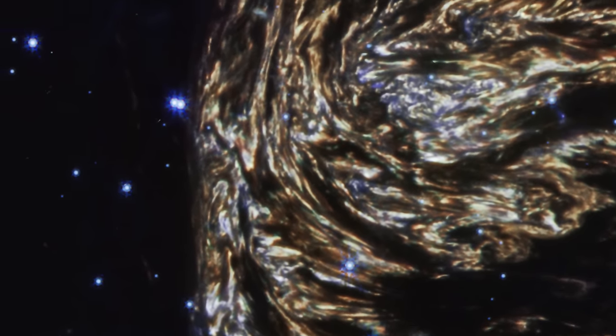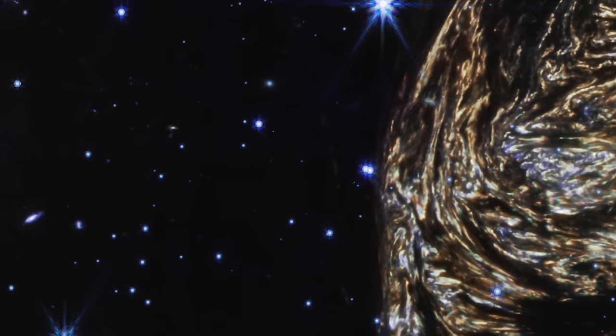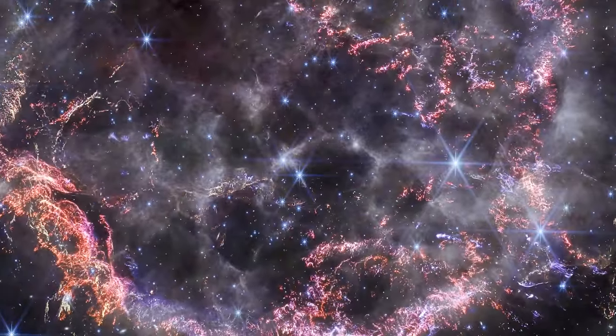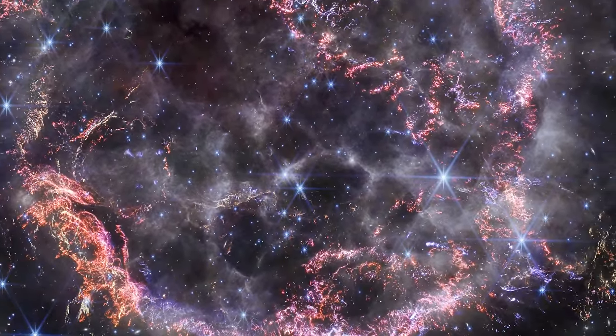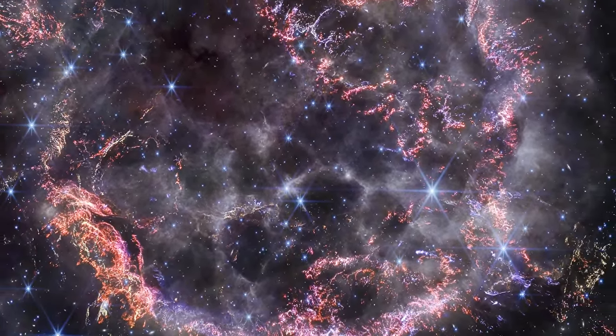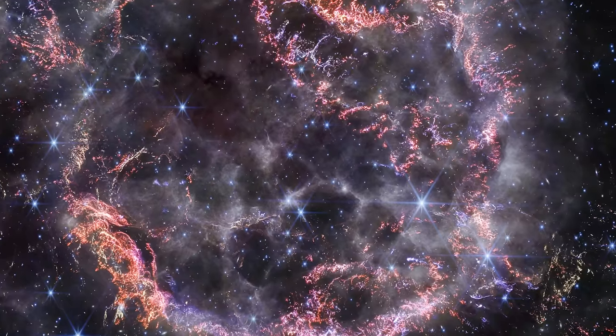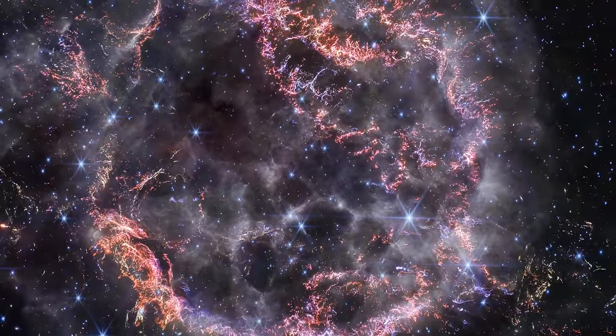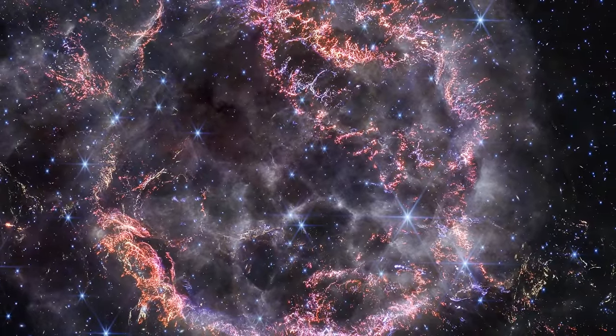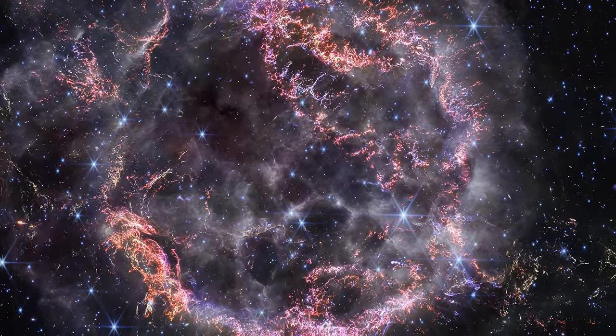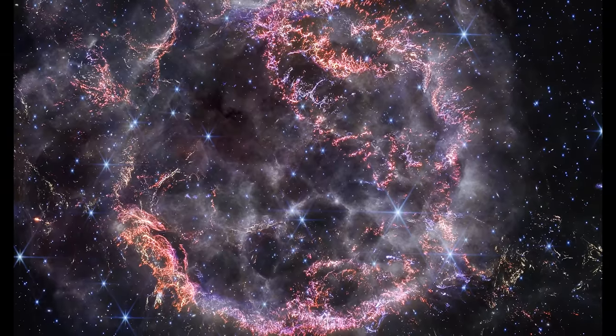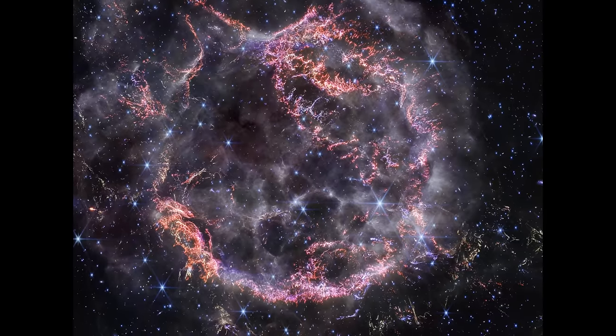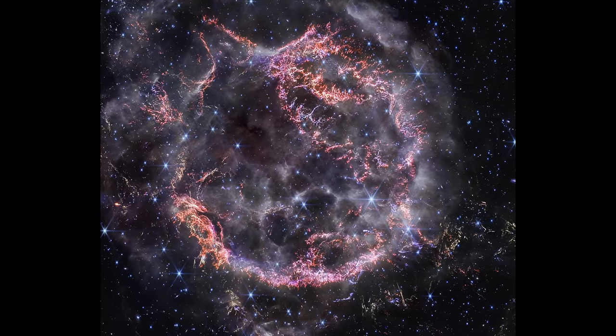The unprecedented detail captured in this new image of Cassiopeia A has allowed scientists to discern intricate small-scale structures within the remnants of a supernova. This newfound infrared clarity, only possible with Webb's instruments, enhances our understanding of the processes surrounding supernovae. By studying objects like Cass A, astronomers can unravel the complexities of stellar explosions, trace the distribution of elements, and gain valuable insights into how new stars and planetary systems form.